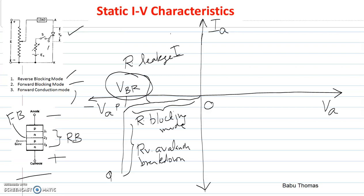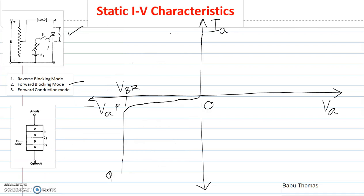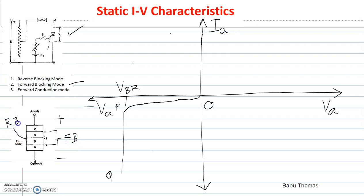Next we will be seeing about the forward blocking region. In the forward blocking mode, the anode is made positive and the cathode is negative. This will make junctions J1 and J3 forward biased and junction J2 reverse biased. As a result, there will be a small amount of forward leakage current flowing through the system.